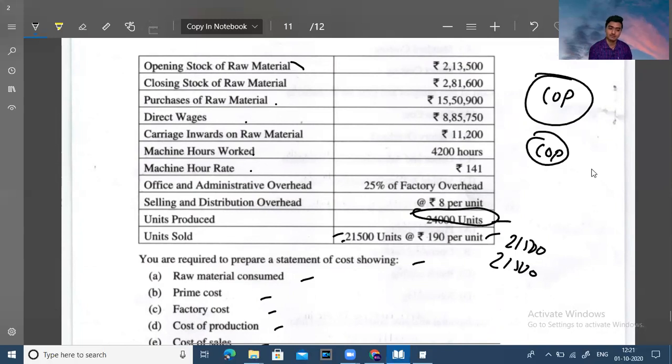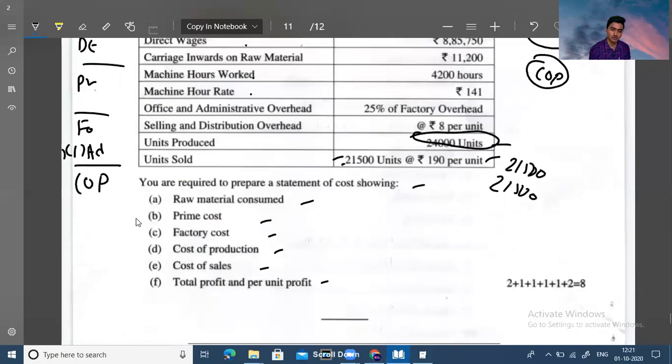How do you calculate the cost of production? Direct material plus direct labor plus direct expenses. That's your prime cost. Add factory overhead. And plus add admin overhead. Factory plus admin. What is cost of production? Cost of production. What do you have to do? Total cost. You have to divide by the number of units. You have to divide by the number of units. Cost per unit.